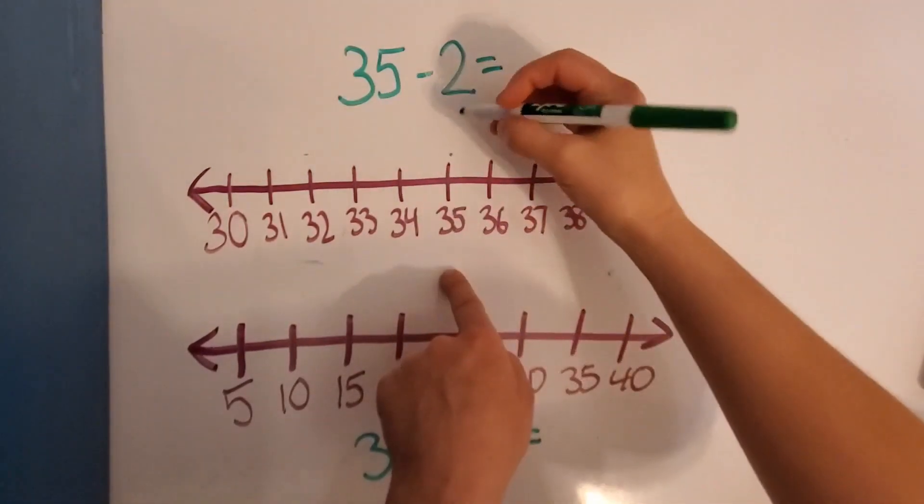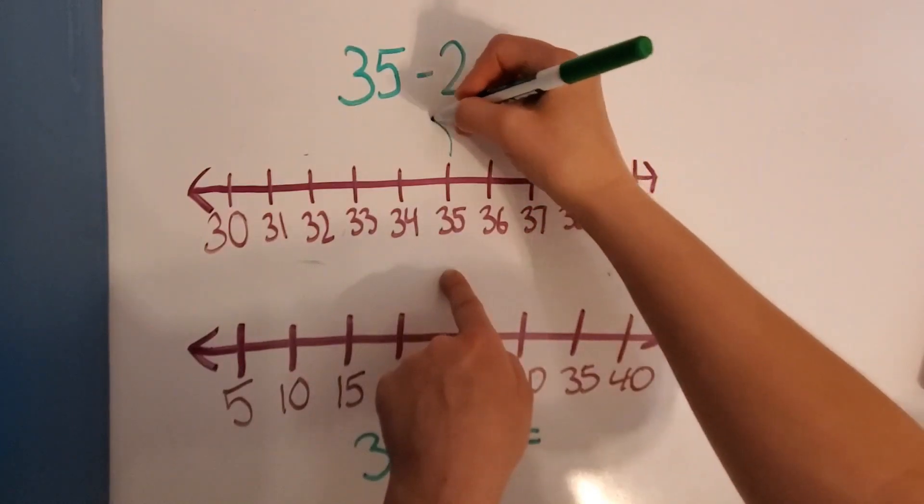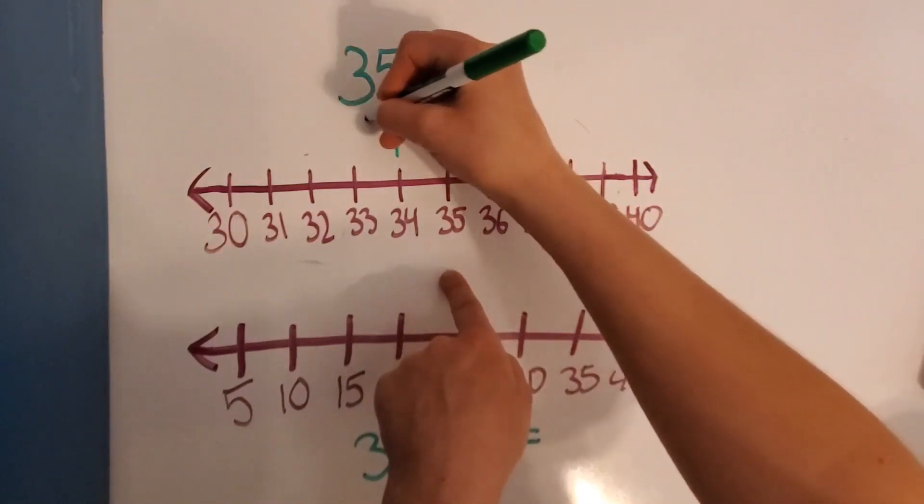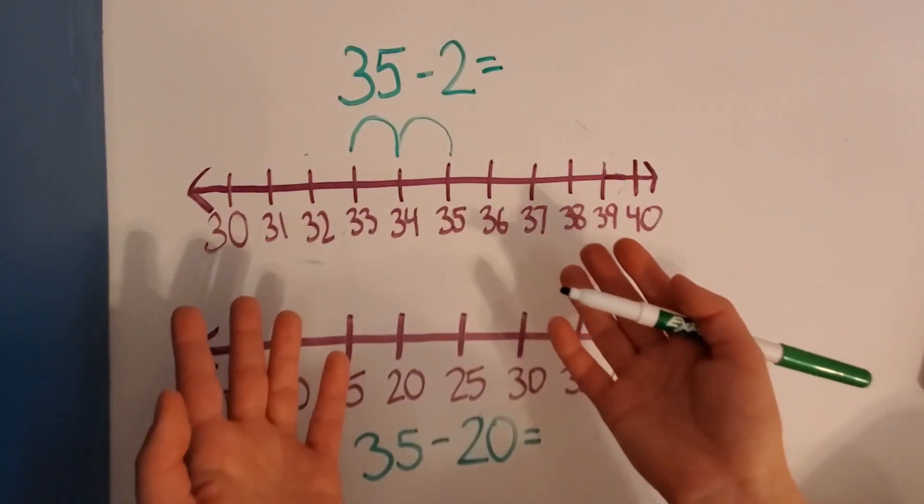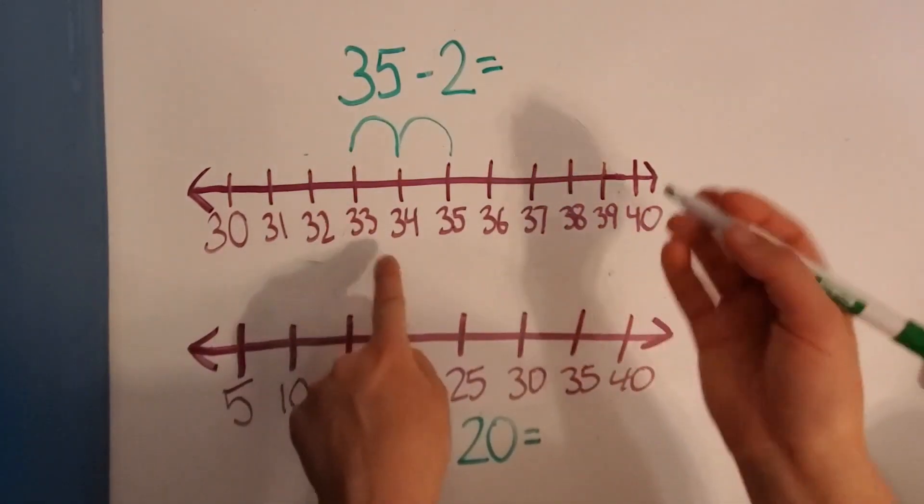And how many do we need to go back for this one? 2, we go back 2. So 35 minus 1 and then minus another one. What number do we land on? 33, right?